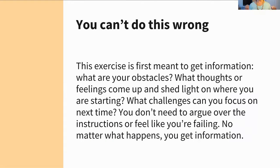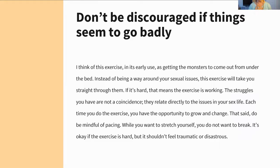Some notes about this exercise: first of all, you cannot do this wrong. You cannot fail this. This is the laboratory. The first thing we're going to find are the obstacles. The things that are going on in your sex life will show up in this exercise. We learn from what happens no matter what it is — even not doing it carries information about how it didn't happen, just like there's information in how we don't have sex. You don't need to fight about the instructions or worry that you're failing or that it was supposed to go differently. Everything that happens makes sense, and that's what it's for. Don't be discouraged if it seems to go badly.